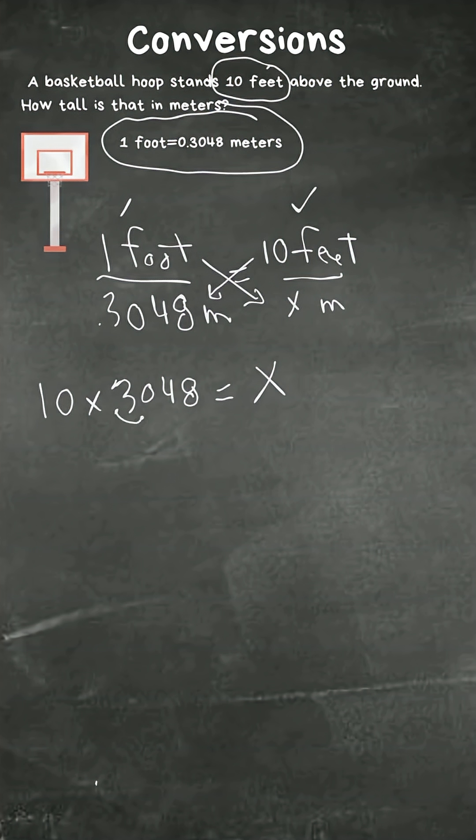Now let's multiply this. Since it's a ten, I know that I can just move this decimal one place to the right. So that gives me 3.048 equals X.